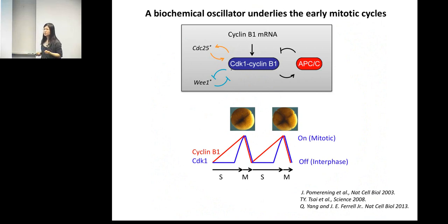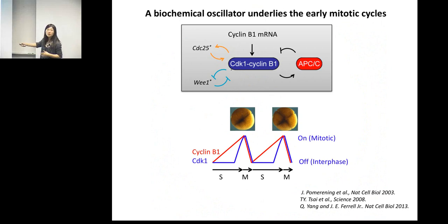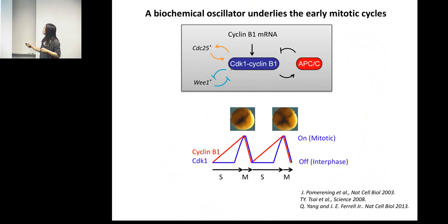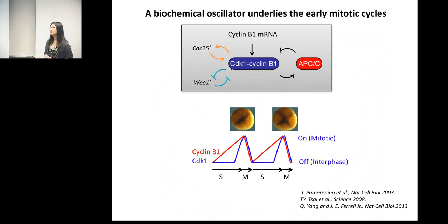This is actually a bistable switch. It makes the cell enter into mitosis without any premature decision, and once it enters it will not exit. When CDK1 turns on and drives the cell into mitosis, another protein complex called the anaphase-promoting complex is turned on. This complex is an E3 ubiquitin ligase that targets Cyclin B for degradation, thereby resetting CDK1 back to the off state, completing the first cell cycle. This is a cell-autonomous oscillator that drives the system in a self-sustained manner.